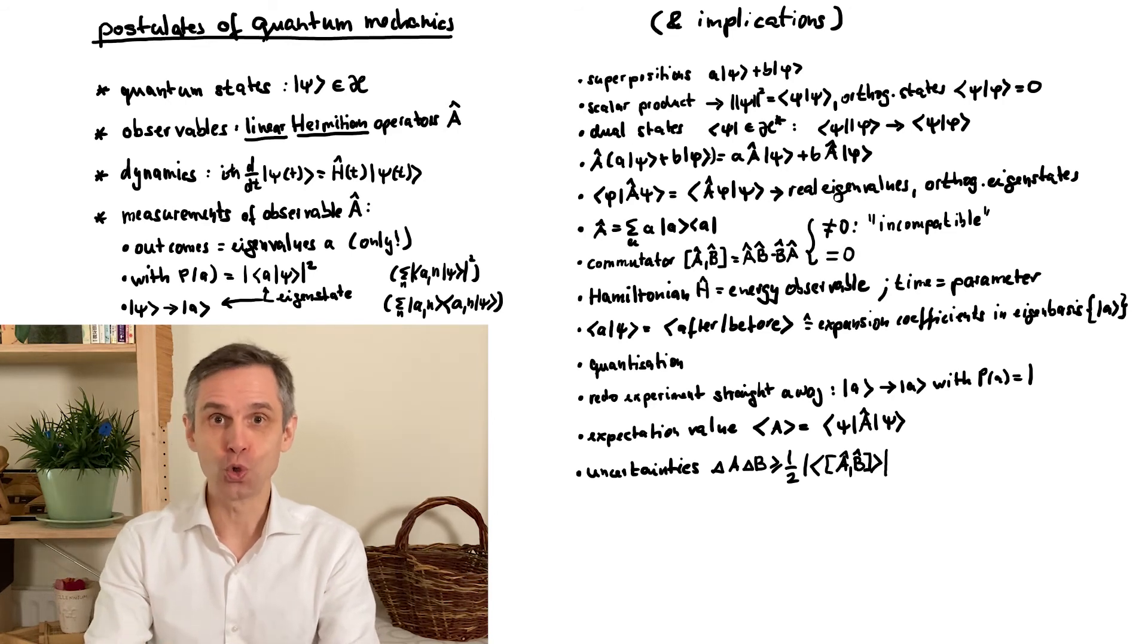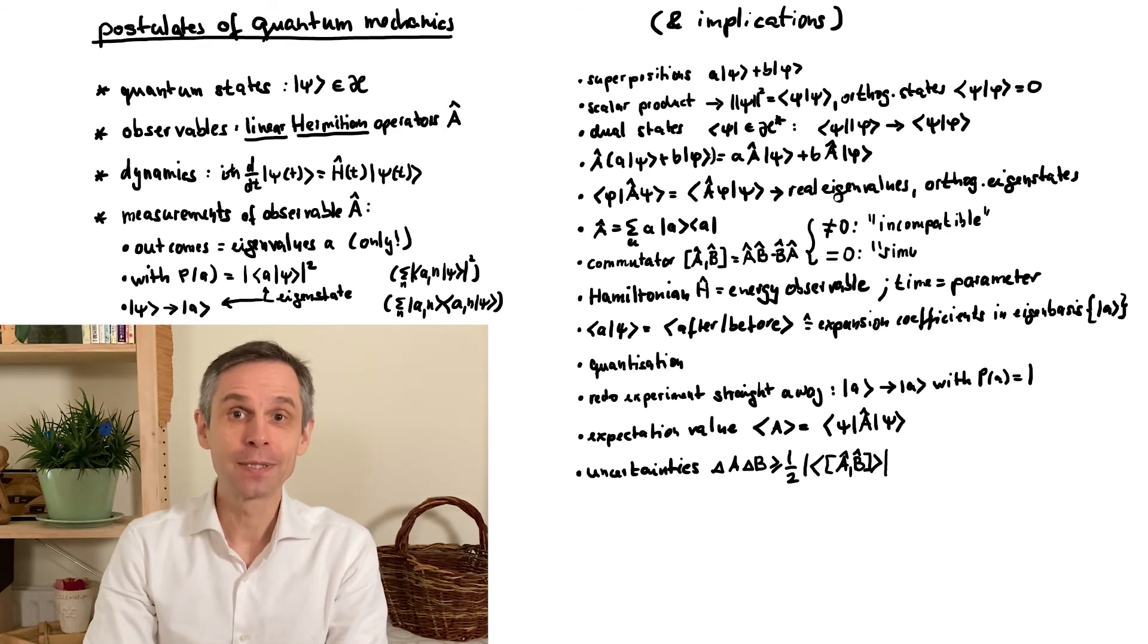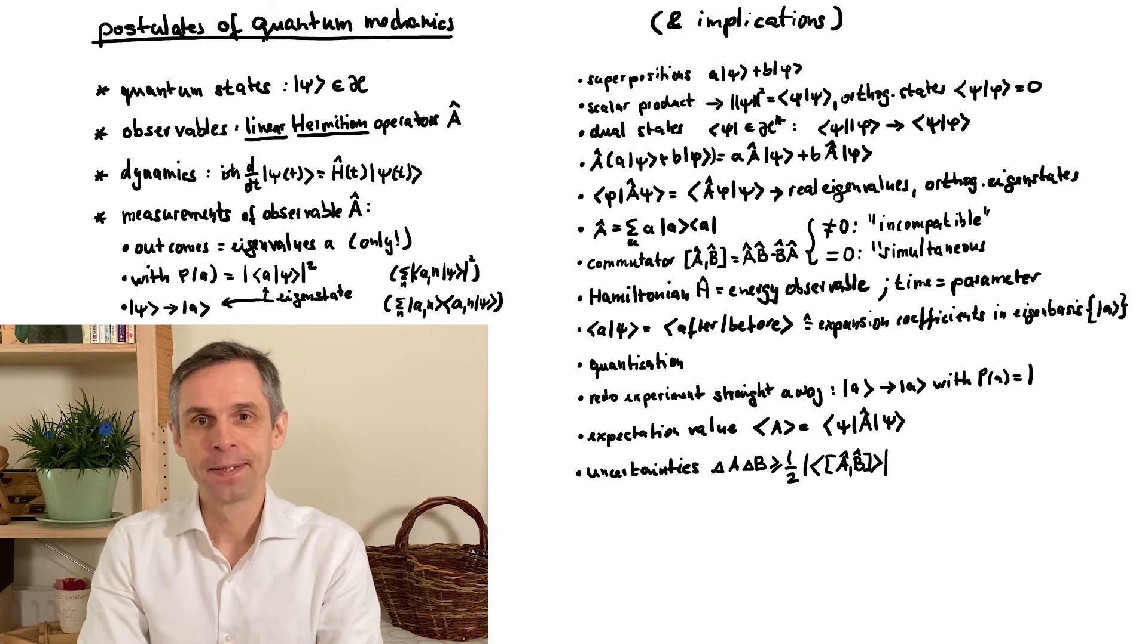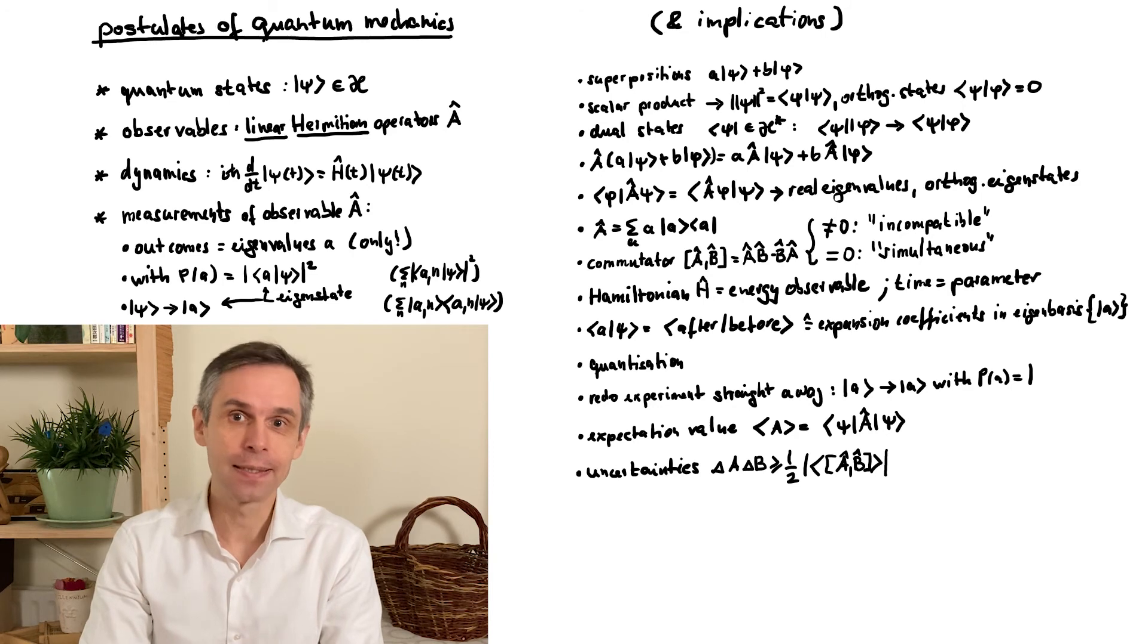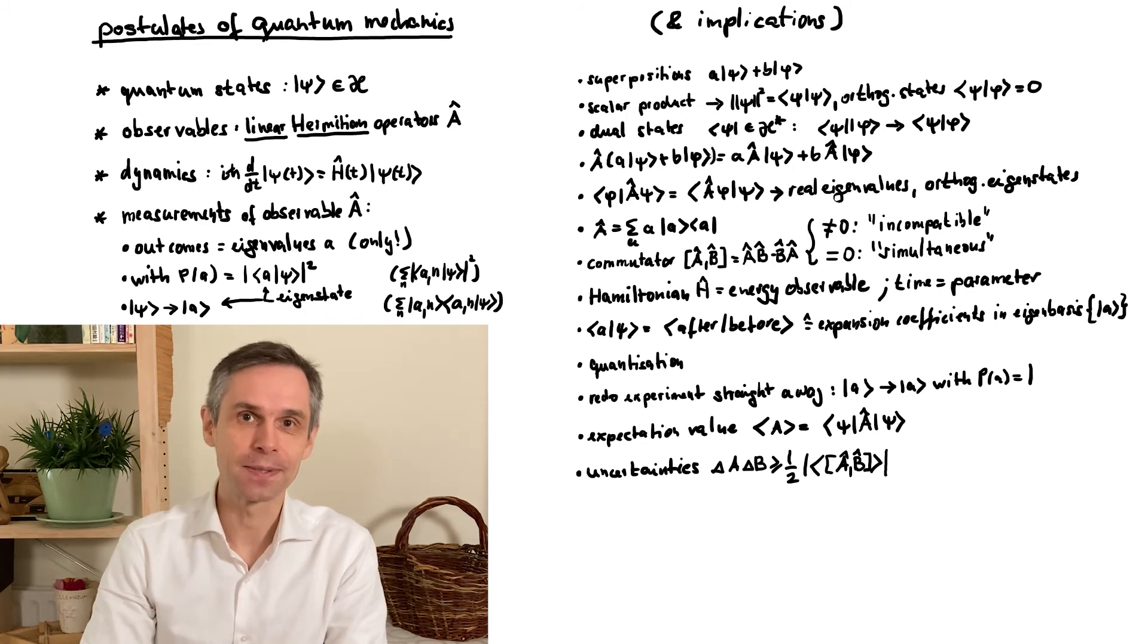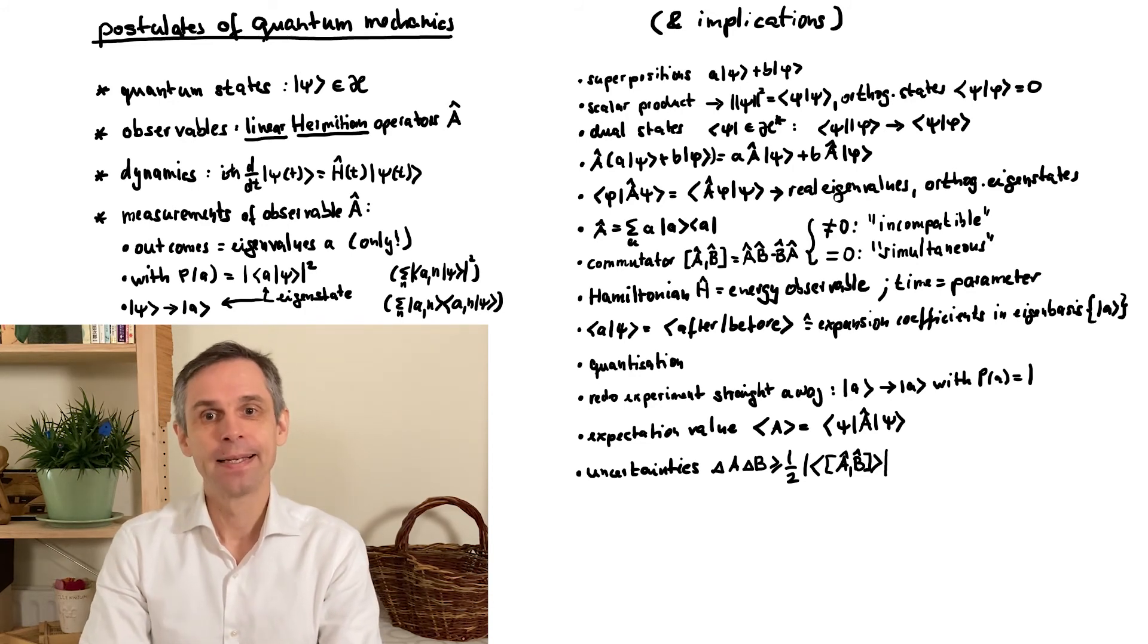If two observables do commute, we call them simultaneous observables. You can then indeed design an apparatus that measures them both. The final state after the measurement is then a joint eigenstate, and the outcomes are the associated eigenvalues of the two operators. This can actually reveal some very interesting correlations of these outcomes.